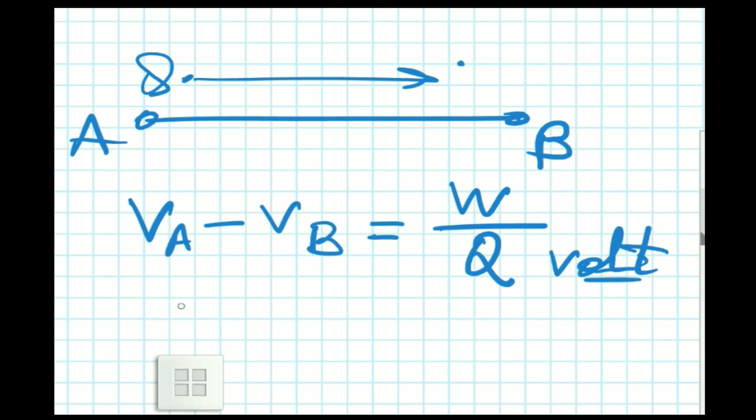Volt means joules per coulomb. Also remember this one because it will be usable further while dealing with another parameter of current electricity.